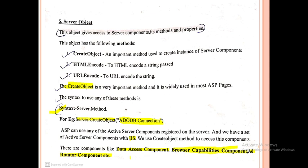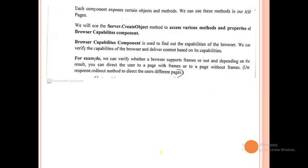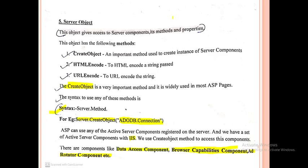There are also AJX components. These components — Data Access (OLEDB, ODBC), Browser Capabilities, AD Rotator, AJX — are used for external connectivity such as database connectivity or accessing external files. Each component exposes its own objects and methods.